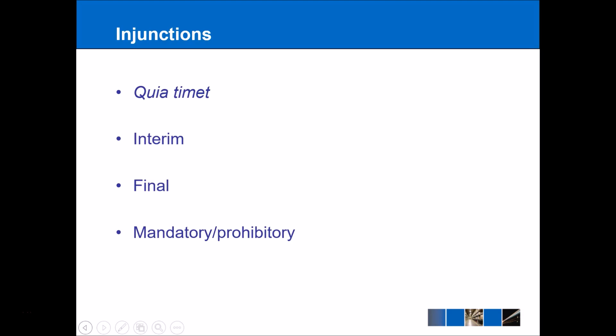Damages are not the only type of remedy available in tort law, and if you are answering a problem question it's important that you consider other things such as injunctions as well. There are three main categories of injunction: quia timet, interim, and final. Based on those categories, there are two different types of injunction that the court can award: mandatory and prohibitory.